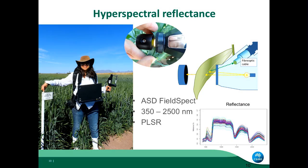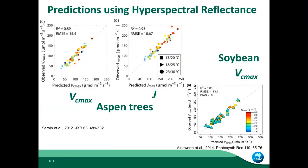One solution we found was hyperspectral reflectance. I've been using the ASD FieldSpec, which goes from 350 to 2500 nanometers. Here is a diagram — usually we have the light that is reflected by the leaf and captured into the fiber optic. This sensor gives you all the spectra from 350 to 2500 nanometers. It has been applied with partial least squares regression to predict Vcmax and J for aspen trees, correlating well with observed data. It has been tried in aspen trees and soybean.